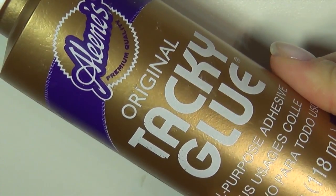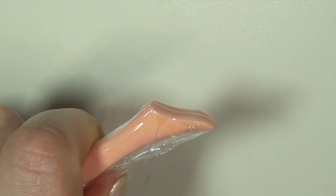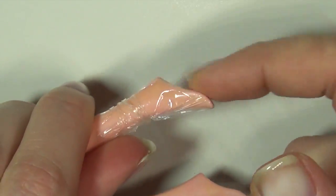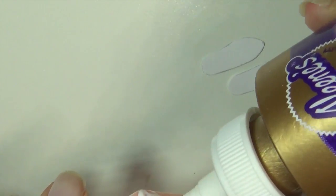Now get out some tacky glue, some kitchen wrap and a small rubber band. Wrap the doll's foot with the kitchen wrap and secure it with the band. This is to make sure we don't get glue on our doll. Then cover the bottom of the doll's foot with tacky glue and apply the first layer.